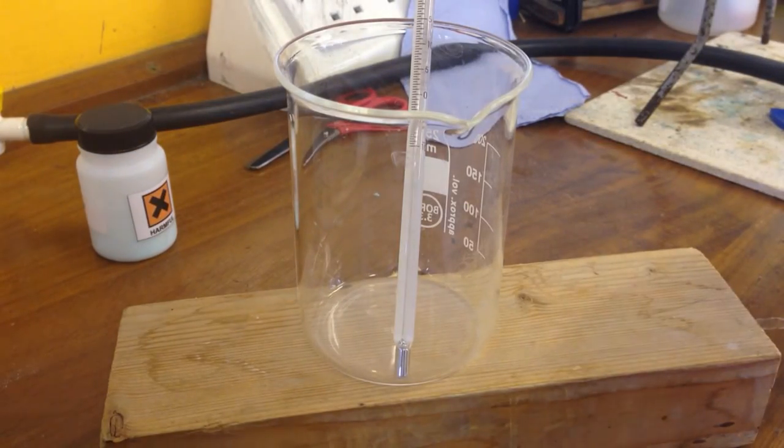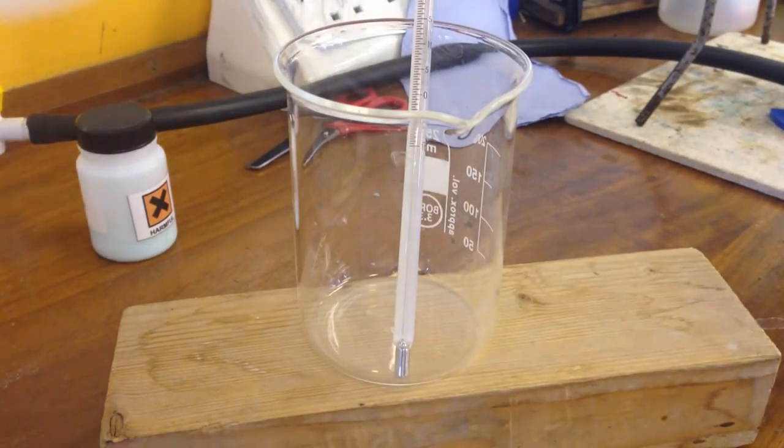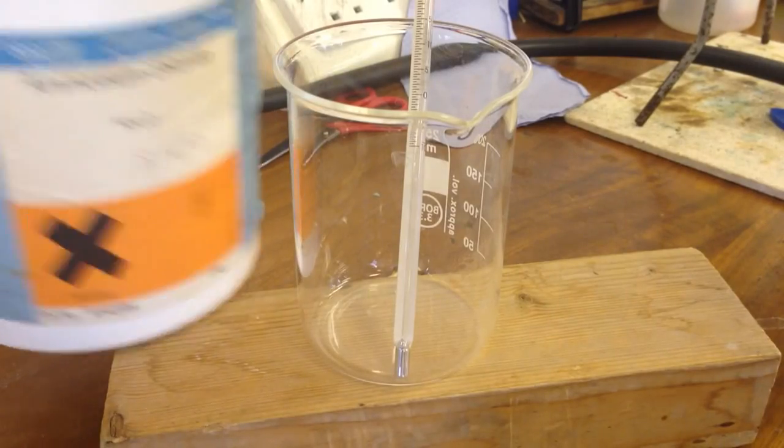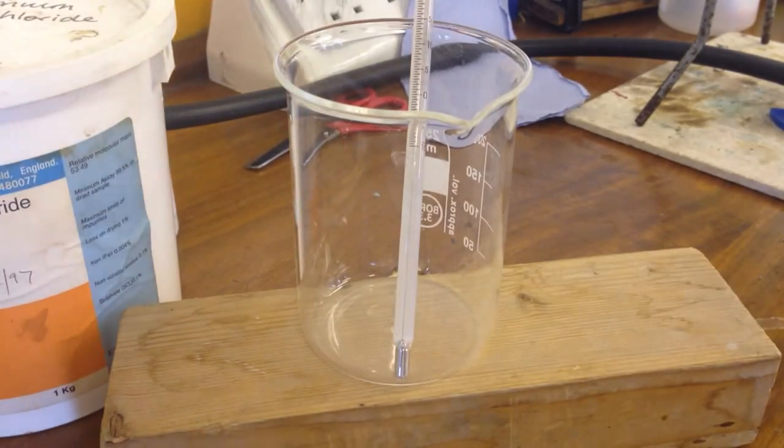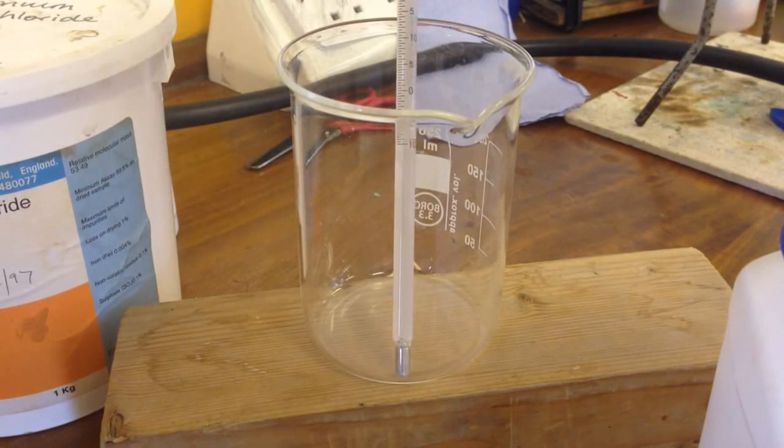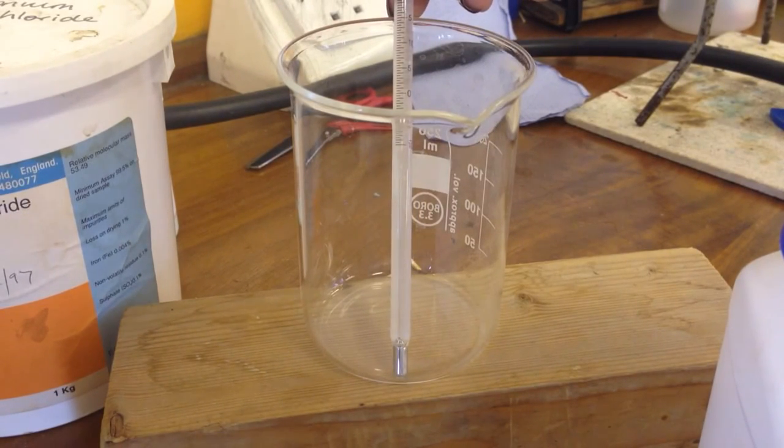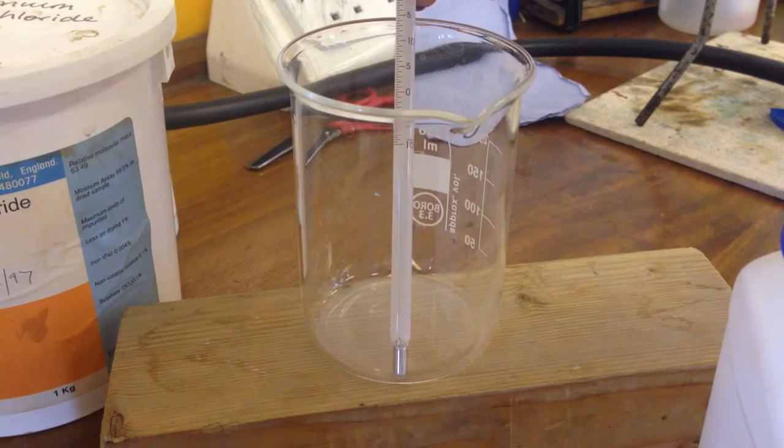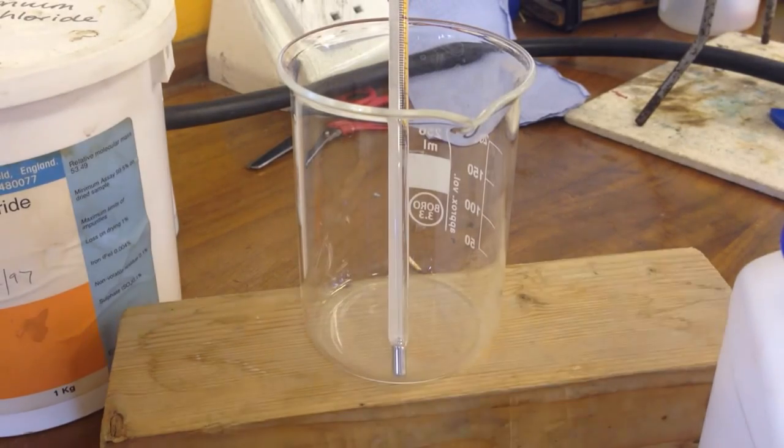In this video, I'm going to show you an endothermic reaction between ammonium chloride and barium hydroxide. So I've got my thermometer in here so we can keep track of the temperature. It's currently reading about 18 degrees in the lab.